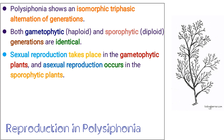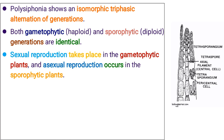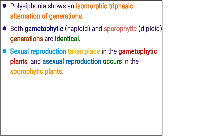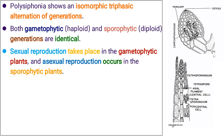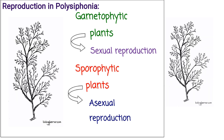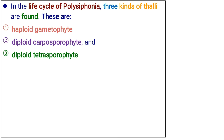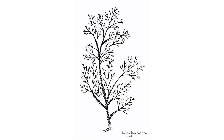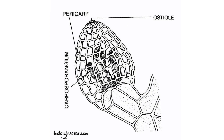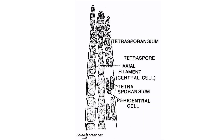Polysiphonia shows an isomorphic triphasic alternation of generations. Both gametophytic and sporophytic generations are identical. Sexual reproduction takes place in the gametophytic plants and asexual reproduction occurs in the sporophytic plants. In the life cycle of Polysiphonia, three kinds of thalli are found: haploid gametophyte, diploid carposporophyte, and diploid tetrasporophyte.